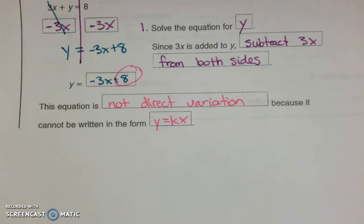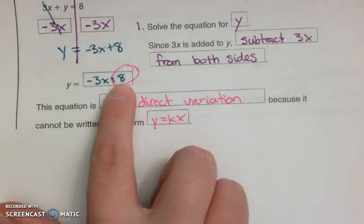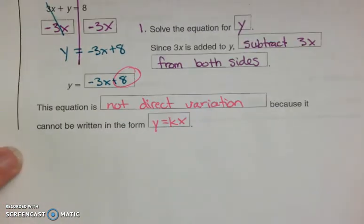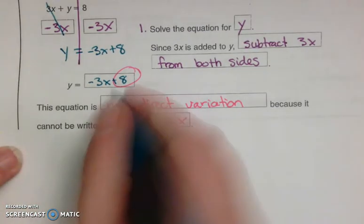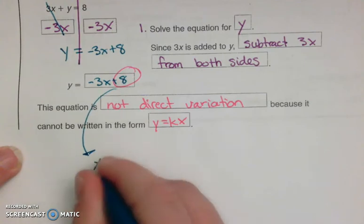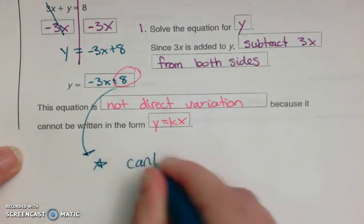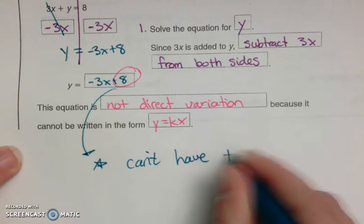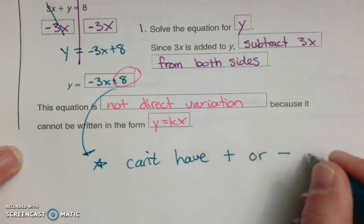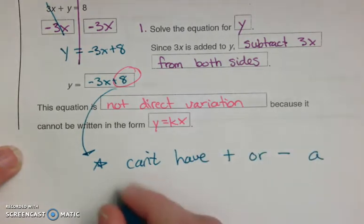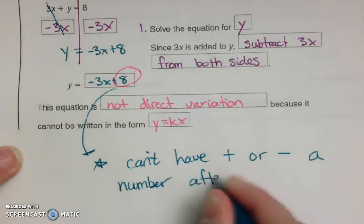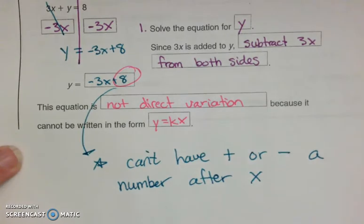That's actually a good note to make: you can't have plus or minus — meaning addition or subtraction — of a number after the x. The y-intercept has to be zero.